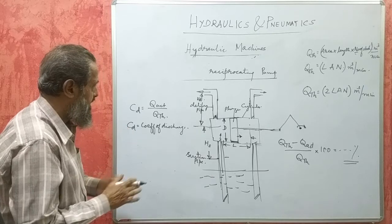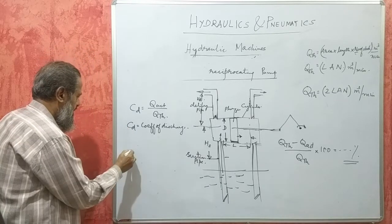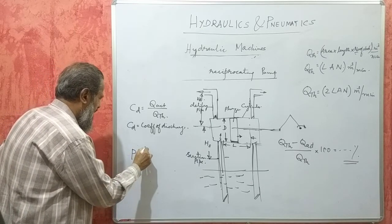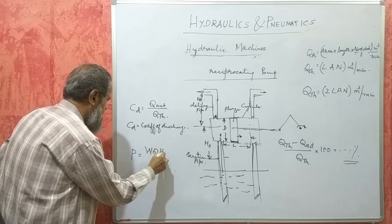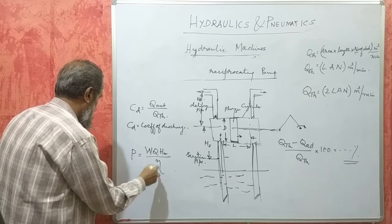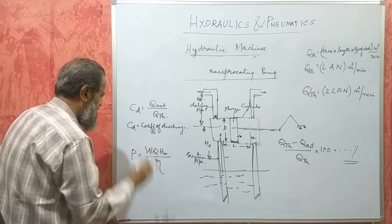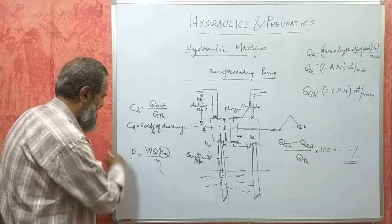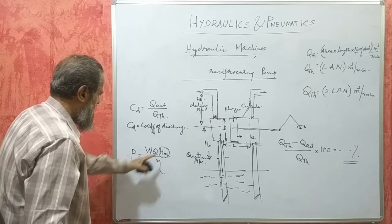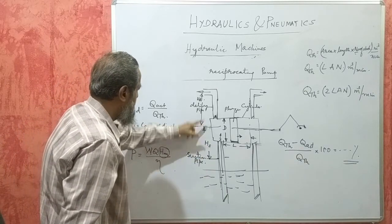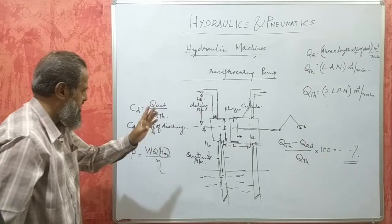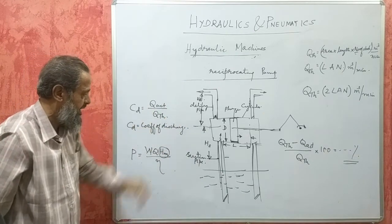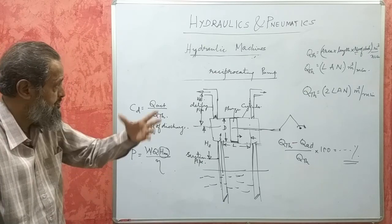In both centrifugal and reciprocating pumps, the power required to drive the pump is W × Q × H_M divided by the efficiency of the pump, where H_M is the manometric head, Q is the discharge, W is the specific weight of the liquid, and η is the efficiency. The manometric head H_M is the sum of suction head H_S, delivery head H_D, and frictional losses (if given). Thank you.